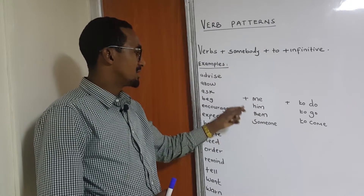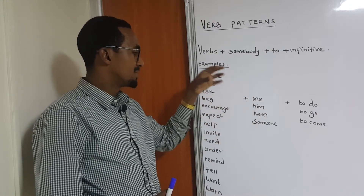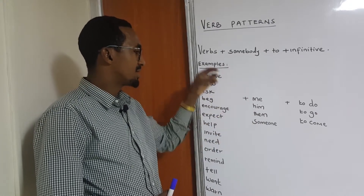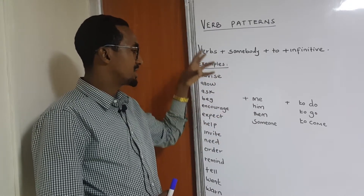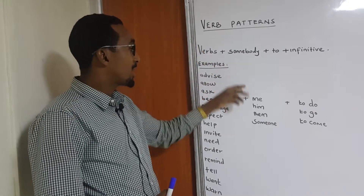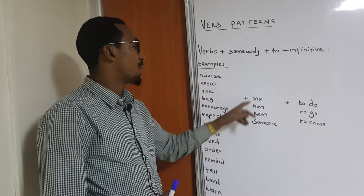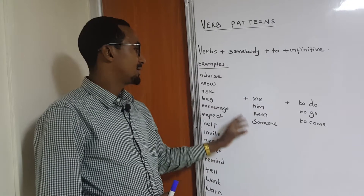The 'somebody' can be: me, him, them, someone, somebody, you — we are using the object pronoun here.